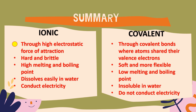For the summary of the lesson: in terms of formation, ionic compounds form through high electrostatic force of attraction, while covalent compounds form through covalent bonds where atoms share their valence electrons. In terms of hardness, ionic compounds are hard and brittle, whereas covalent compounds can be soft and more flexible. In terms of melting and boiling point, ionic compounds have high melting and boiling points, whereas covalent compounds have low melting and boiling points. In terms of solubility, ionic compounds dissolve easily in water, while covalent compounds are generally insoluble in water. In terms of electrical conductivity, ionic compounds are good conductors of electricity, whereas covalent compounds are poor conductors of heat and electricity.